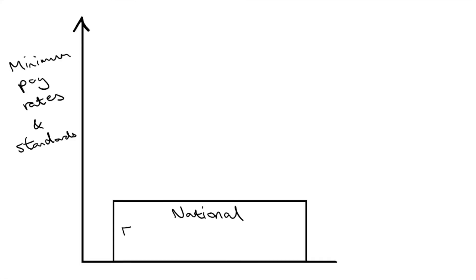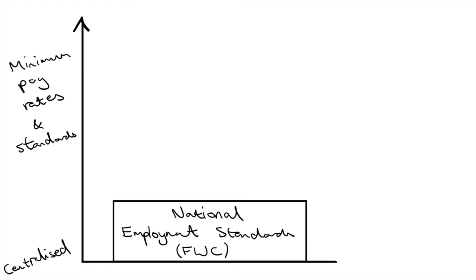At the lowest level are the national employment standards — 10 minimum standards introduced in 2009 under the Fair Work Act. This, along with the minimum wage, are the most centralized standards because anybody who relies purely on these standards is relying on a government body such as the Fair Work Commission to legislate higher wages for them. This applies to the whole nation; no worker in Australia can be paid below the safety net.